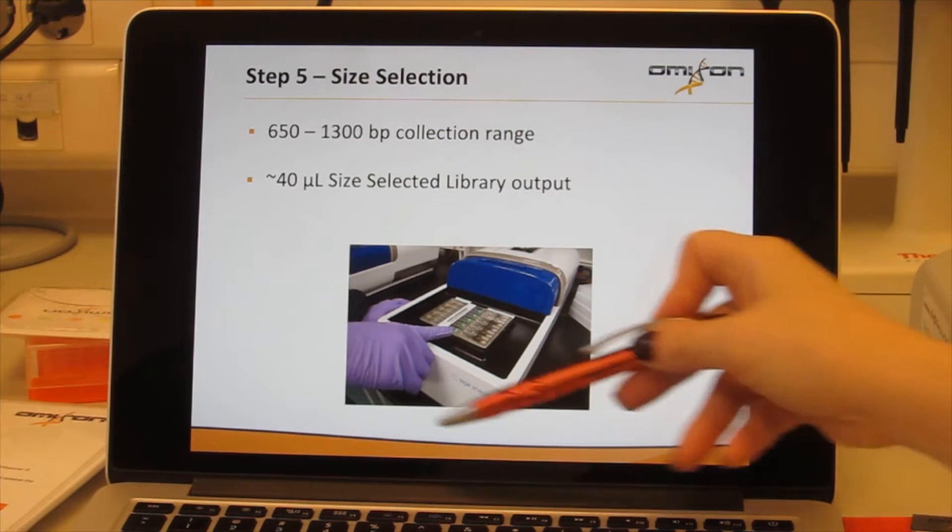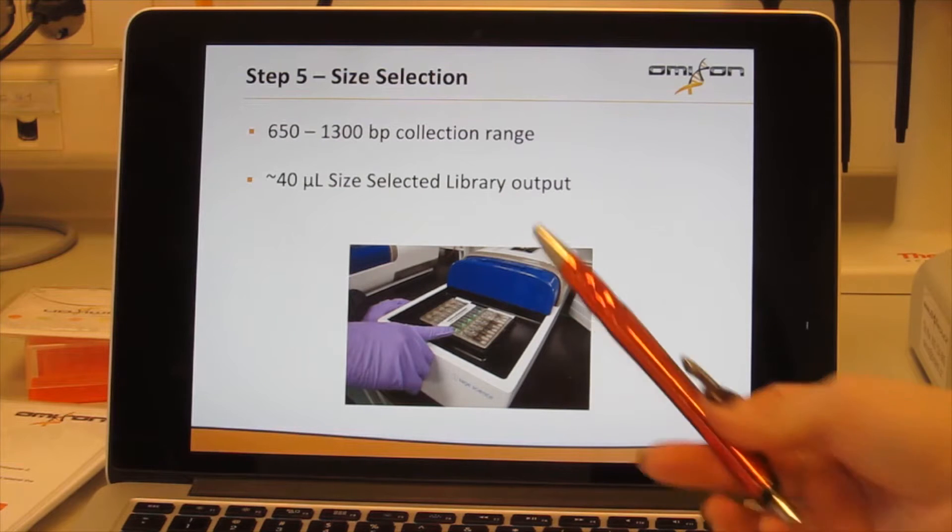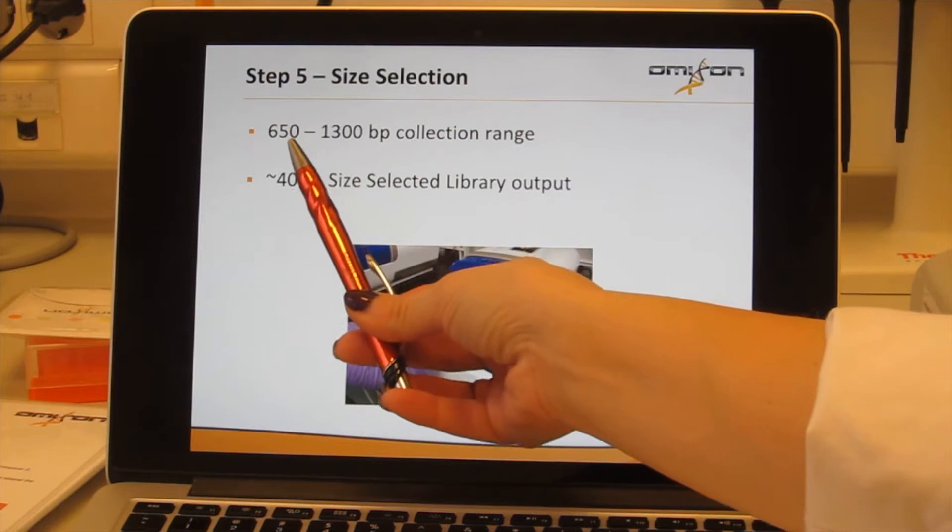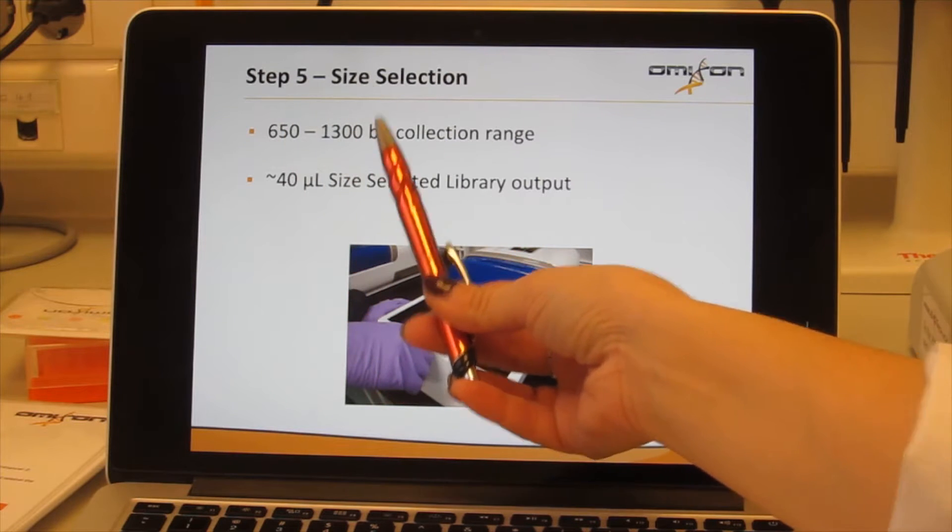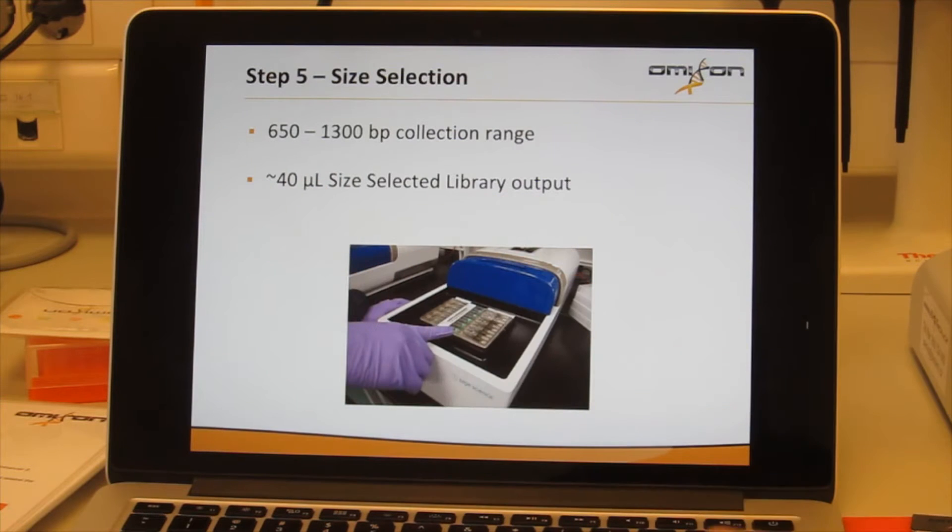Essentially the PIPing Prep machine looks exactly like this, like what you see here in the picture. The collection range that we set the machine up to collect is between 650 base pairs to 1300 base pairs, and at the end of the run we expect approximately 40 microliters of size selected library output.